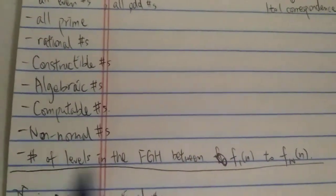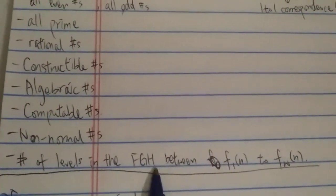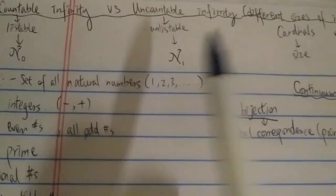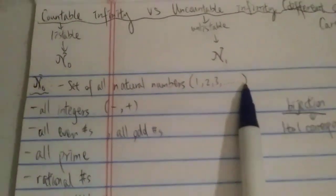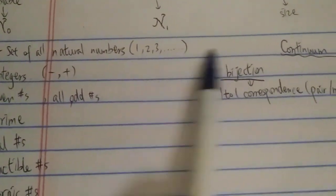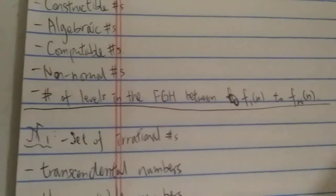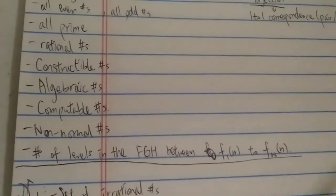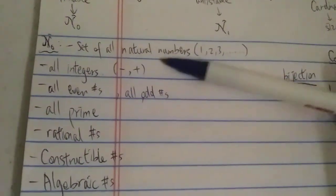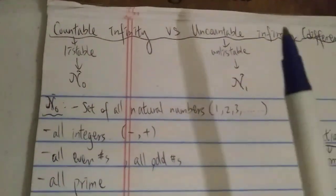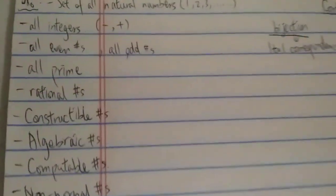So did you get it? The number of levels in the fast-growing hierarchy between f₁(n) and f_ω(n) is ℵ₀ — the same as the set of all natural numbers, because you just go from 1, 2, 3, 4, 5, 6, all the way to ω, which is the smallest transfinite ordinal. Believe it or not, they're all the same size — they all belong to ℵ₀.